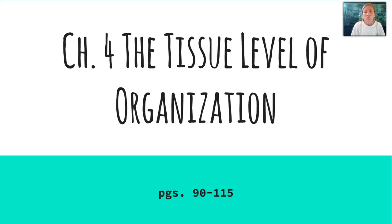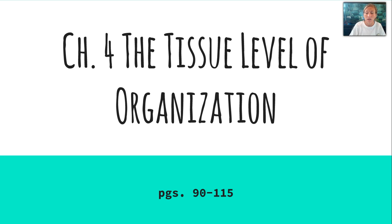Hey guys, it's Ms. Carlson here again. We are going to talk about the tissue level organization today, which is in chapter 4 of your textbook. We're really going to start getting into the meat of anatomy and physiology now. Some of the content may be a little overwhelming because there are so many new terms and so many pieces to the tissue level. But we will practice in class through lab and you'll have a lot of labeling exercises through your hat pack. Just bear with me, take a break as you need to, and make sure you have a good notebook or a Cornell note-taking template. Let's go ahead and get started.